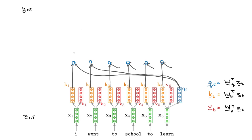These are our A values. We would call them A6,1 — that's our first A for the sixth query — then A6,2, and so on. These values, because they are scaled dot products, will be between minus infinity and infinity; they can be any value.